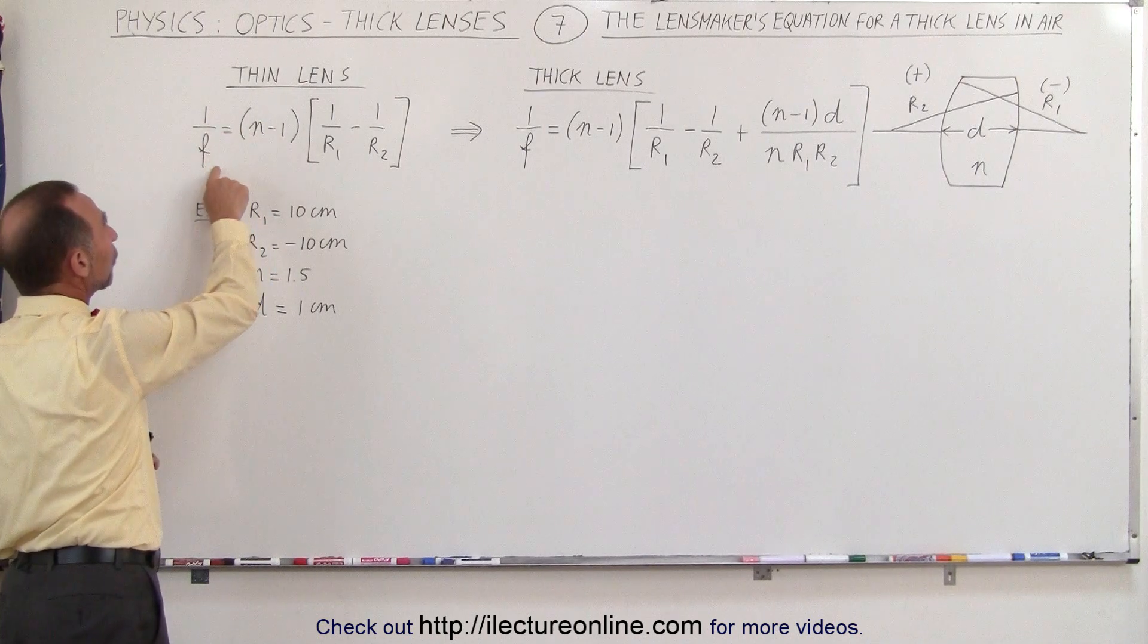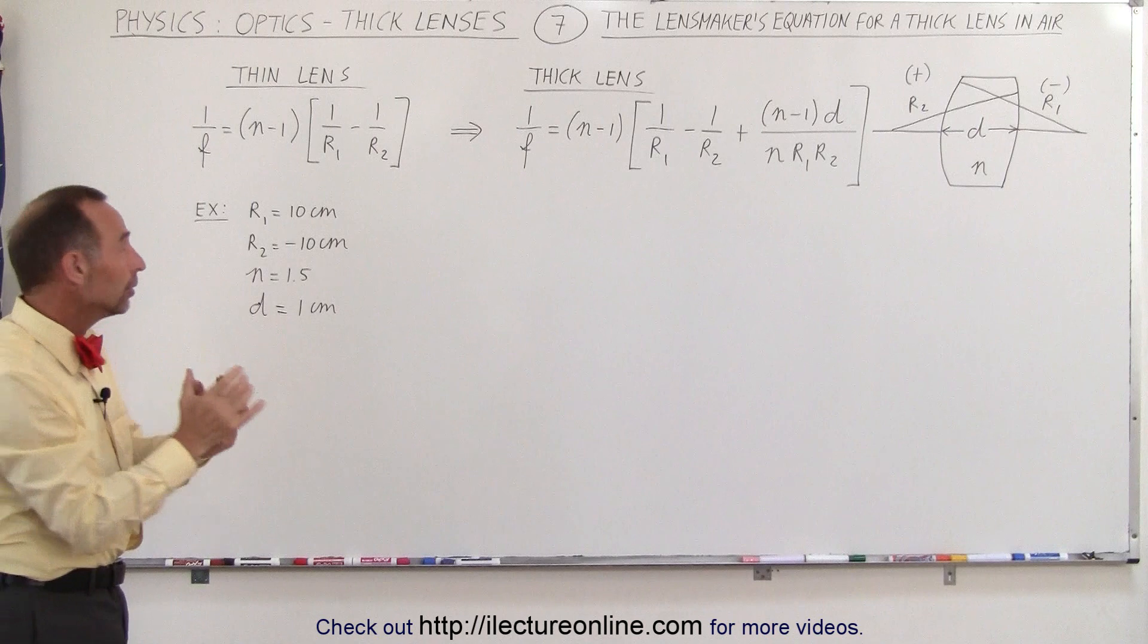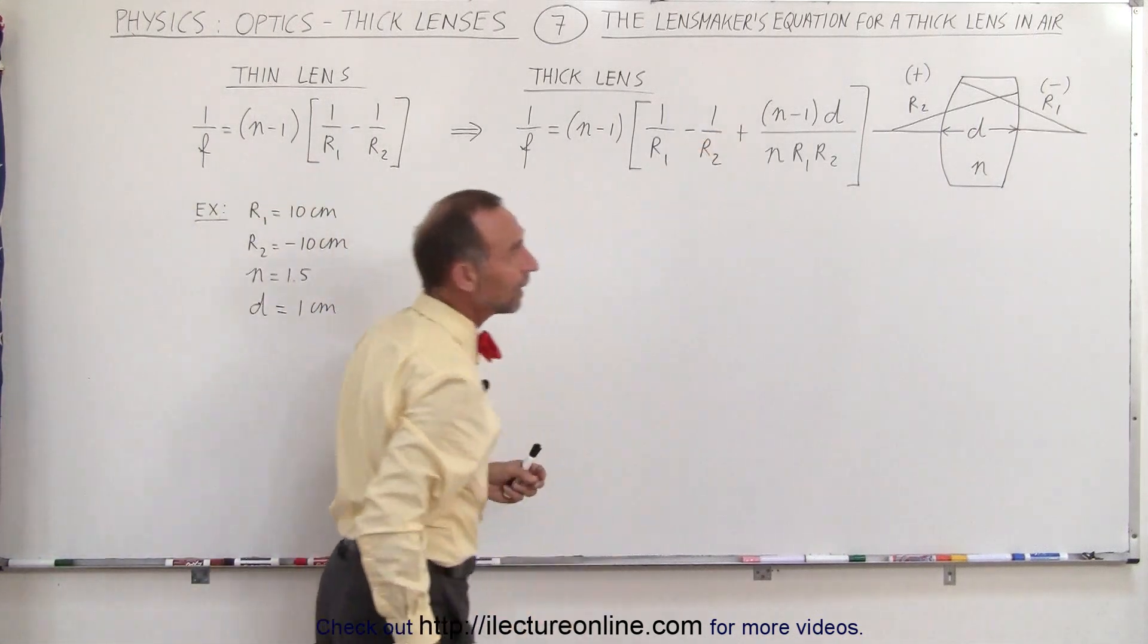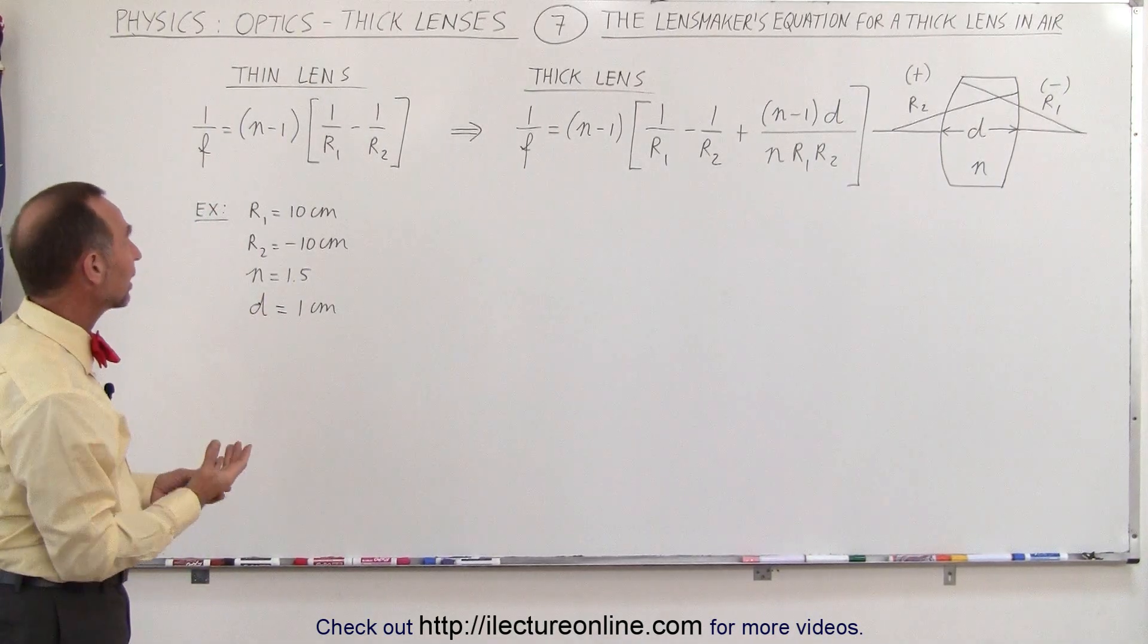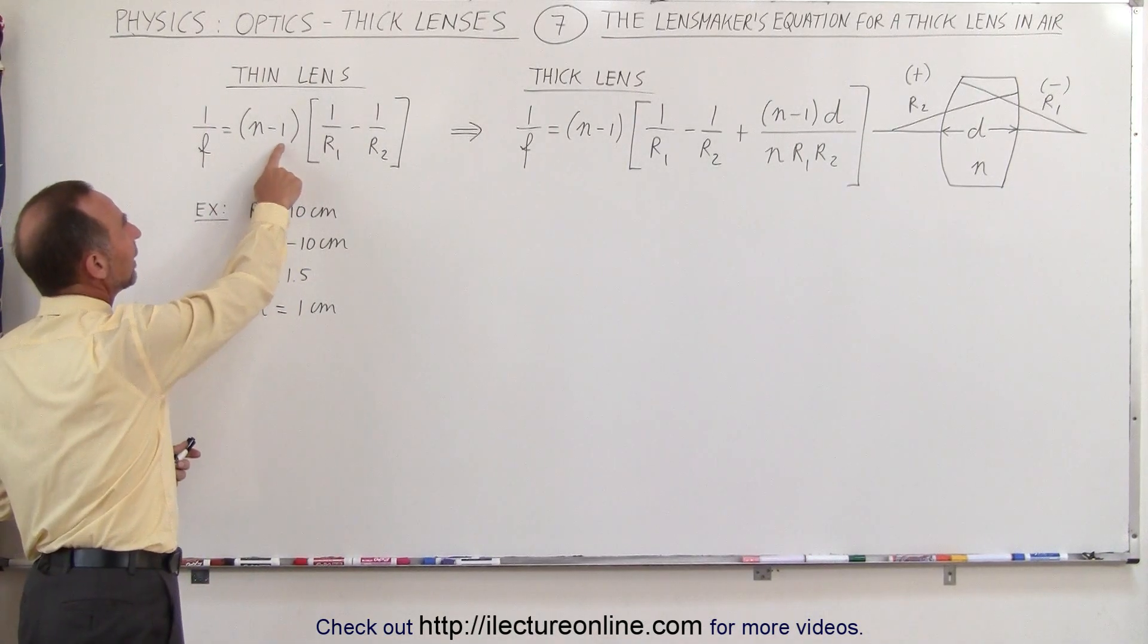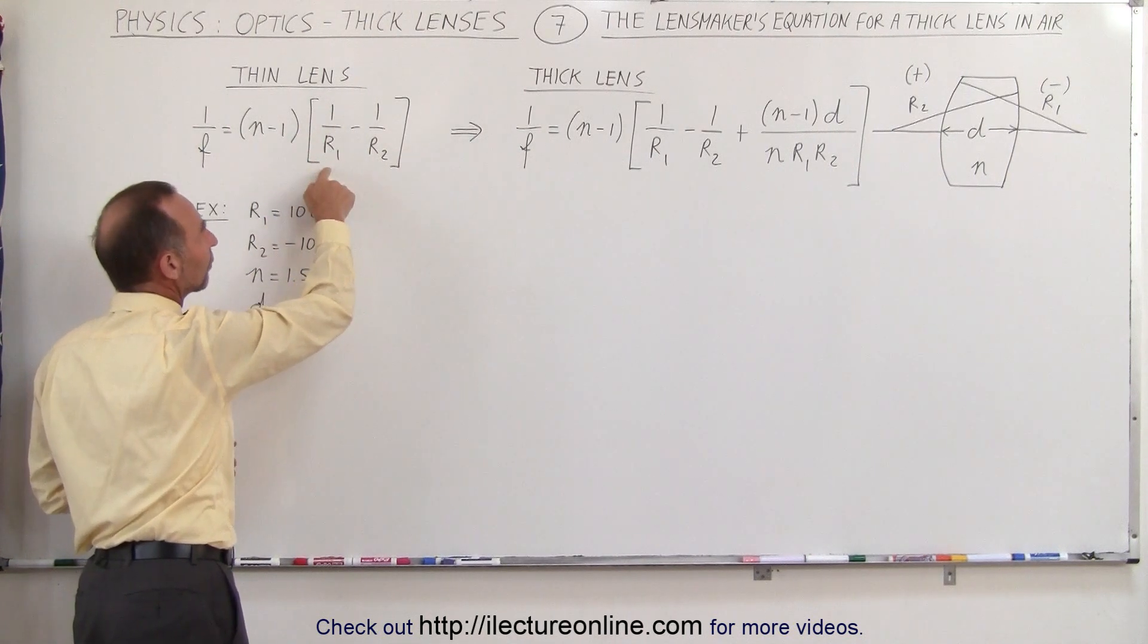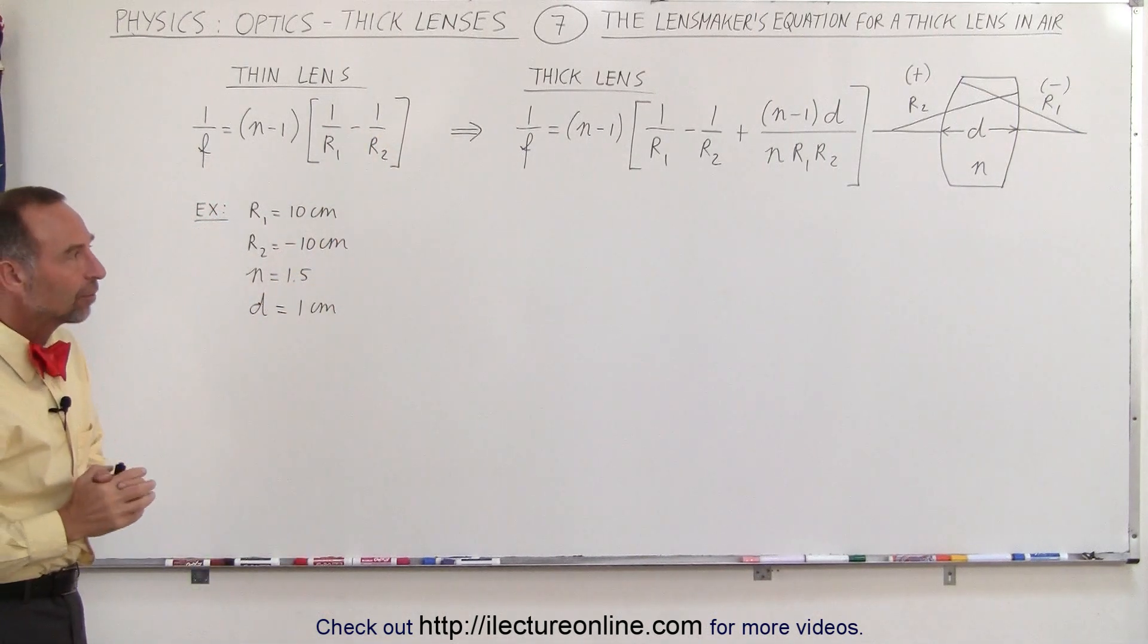1 over the focal length is equal to the index of refraction of the lens material minus 1, and of course we use a 1 here because we're assuming that the lens is in air, that the outside medium is air with an index of refraction equal to 1, times 1 over the radius of the front surface of the lens minus 1 over the radius of the second surface of the lens.